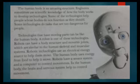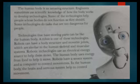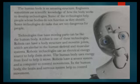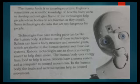Robots can have a body structure and movable joints which are similar to the human skeletal and muscular system. Robotic technologies use an electrical energy source to help them move; the human body uses energy from food to help it move. Robots have a sensor system and a computer to control movements. In the human body, the brain and nervous system help to control movement.